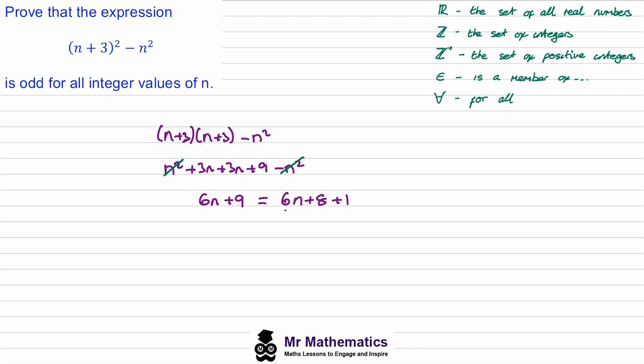Then we can factor 2 out of the 6n + 8, so we get 2 lots of 3n + 4, plus 1. Now we know that this term must be even because it's a multiple of 2, and when you add 1 to an even number we know we get an odd. So for our conclusion we say (n + 3)² − n² is odd for all n values that are members of the set of integers.